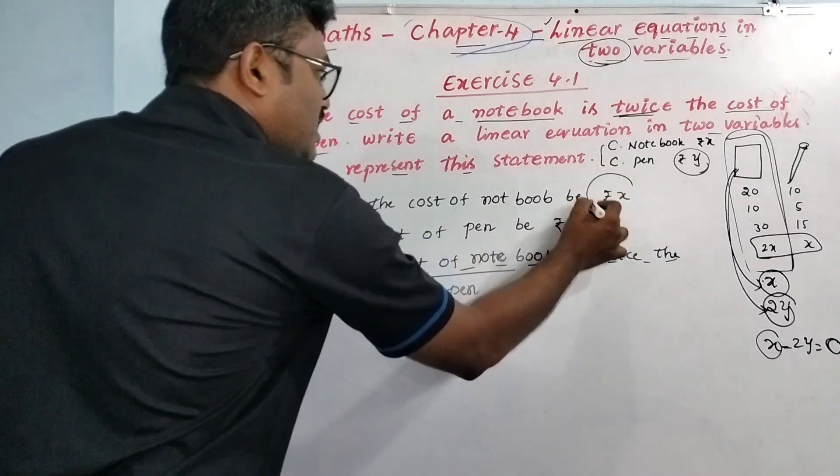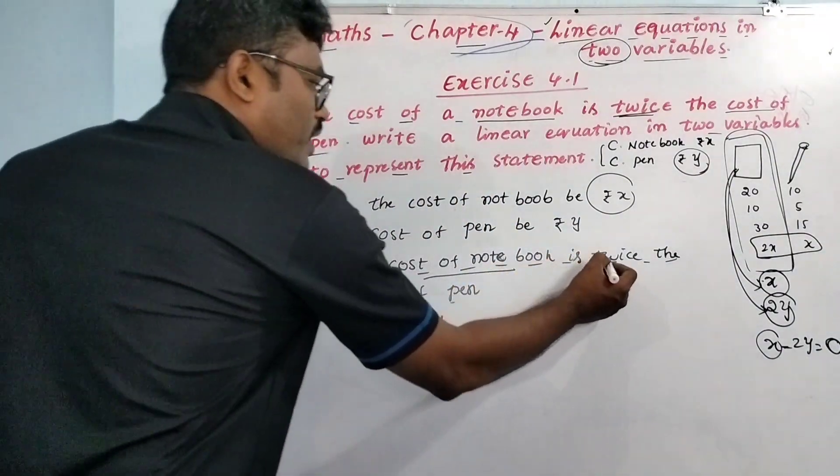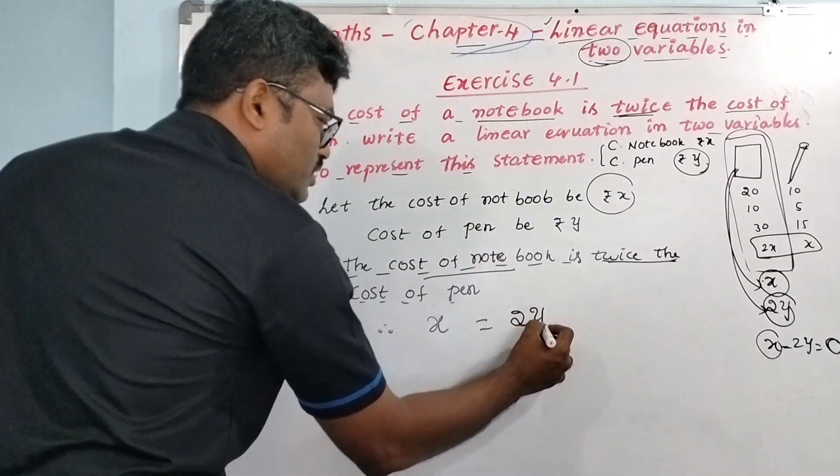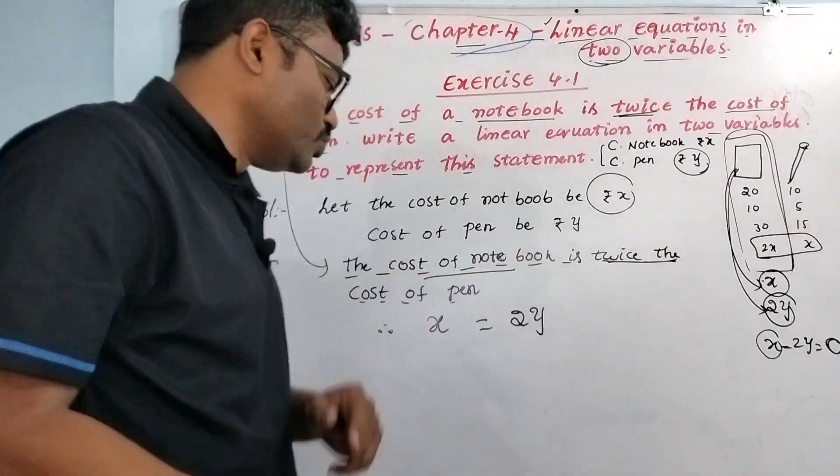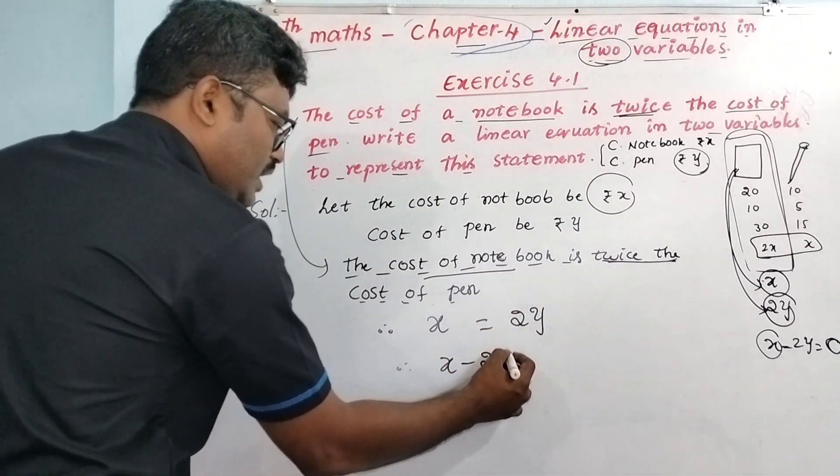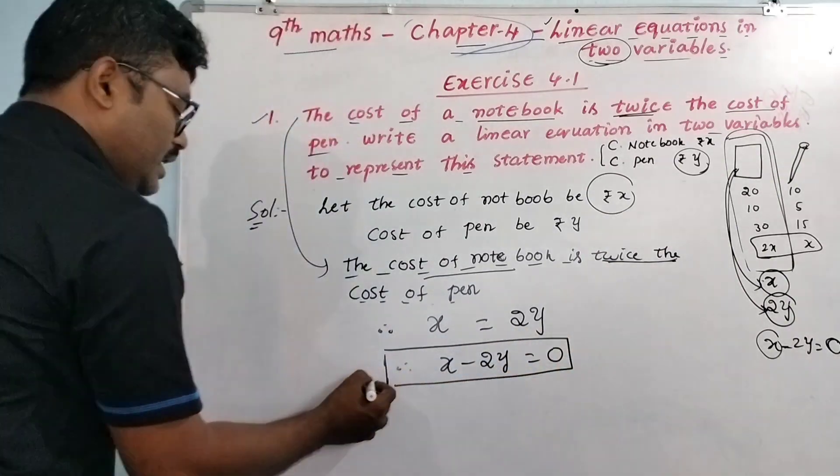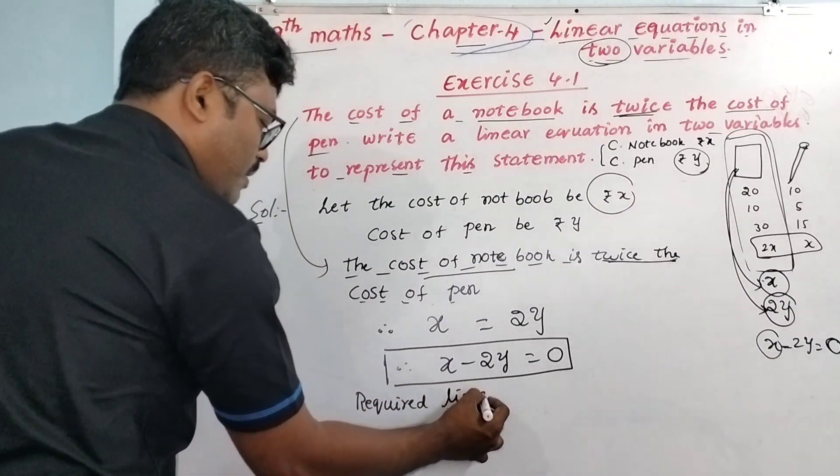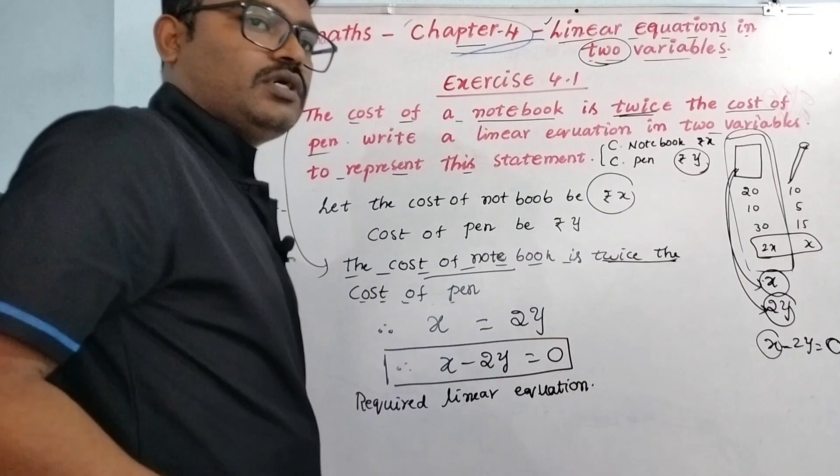Therefore, the cost of notebook, x, is equal to what? Y is the cost of pen. Now it is double, that is 2 into y. X equals 2y. So therefore, the real answer is x minus 2y equals 0. This is the required linear equation. This is the solution.